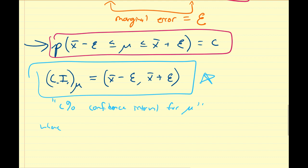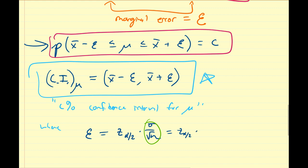The marginal error epsilon equals Z_α/2 times sigma over the square root of n. Also recall that sigma over root n is the standard error of the estimate, so epsilon equals Z_α/2 times the standard error of the estimate for x-bar. You may see it written either way, but they correspond to the same thing.